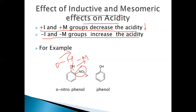When electron density on the oxygen is decreased, proton donation becomes easy, so the compound acts as an acid. Minus M and minus I groups increase acidity. For example, orthonitrophenol is more acidic than phenol because the nitro group, which is an electron-withdrawing minus M effect group, is present on the ring, increasing the acidity of phenol.